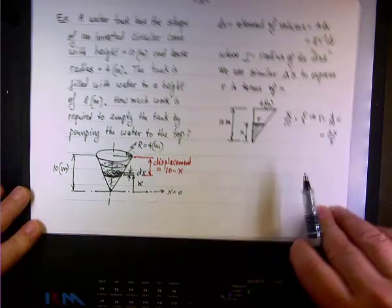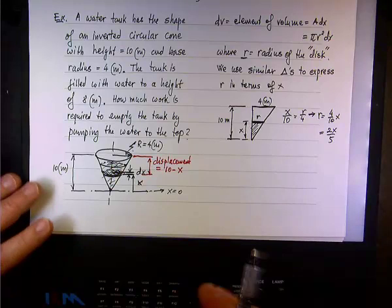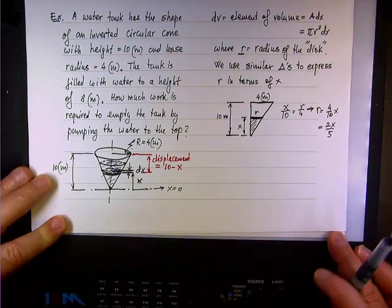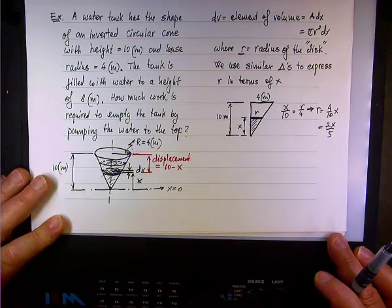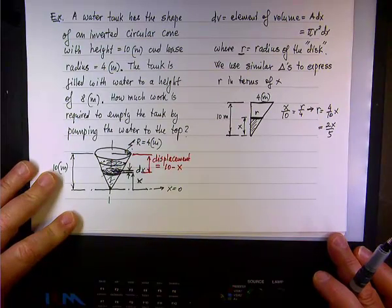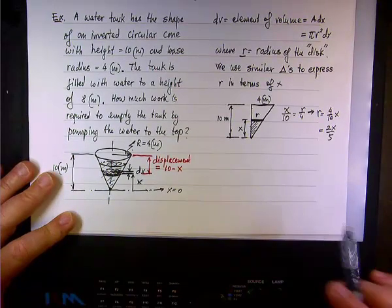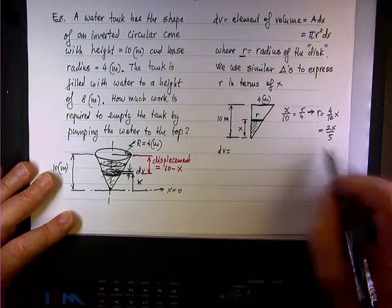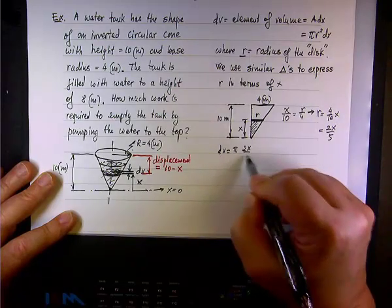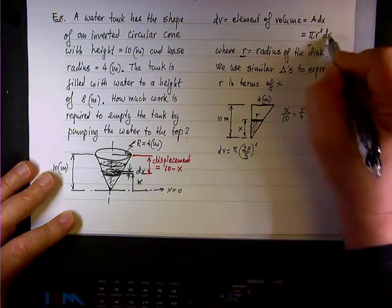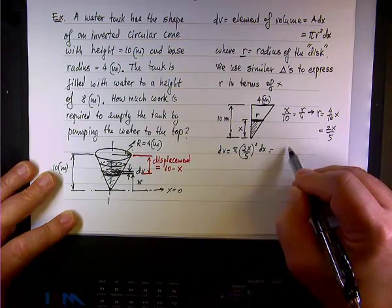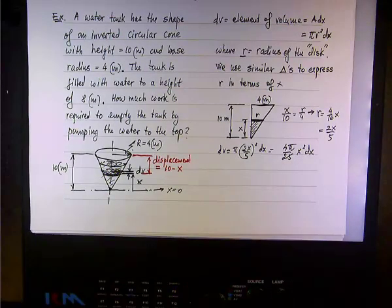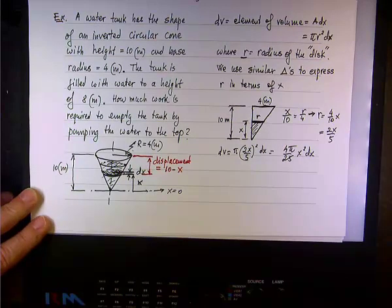Again, just by similar triangle. And this is something you'll do a lot tomorrow. But we've done this before when we did the pyramid. So now the element of volume becomes dV pi r squared. So instead of r we have 2x over 5 squared times dx. So we have 4 pi over 25 x squared dx. This is dV.